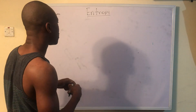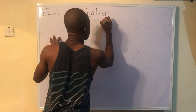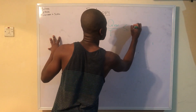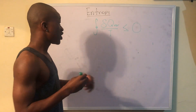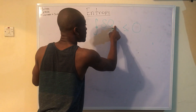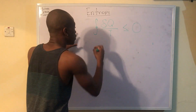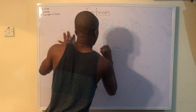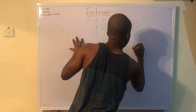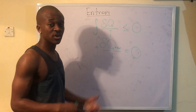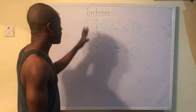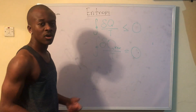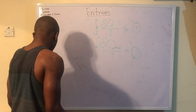There's something you need to know called the Clausius inequality, denoted by the cyclic integral of δQ/T ≤ 0. When Q is reversible, this becomes equal to zero. Q here is our heat transfer, T is temperature, and the cyclic integral just means we're evaluating the integral over a cycle.